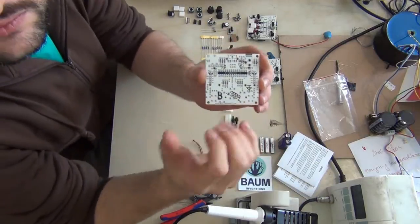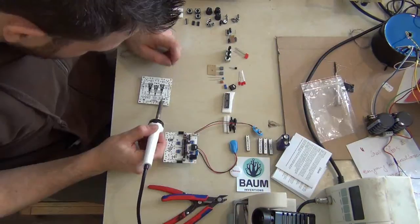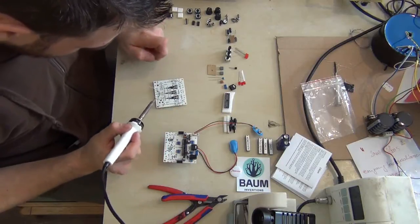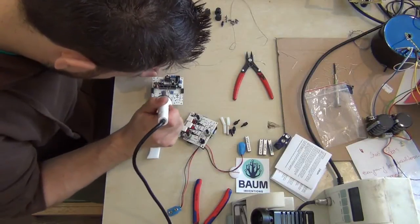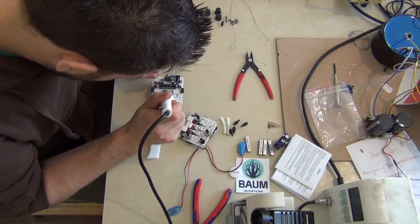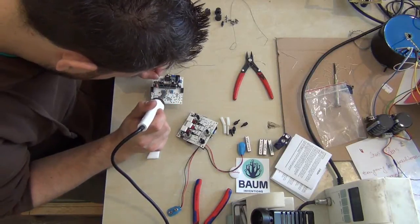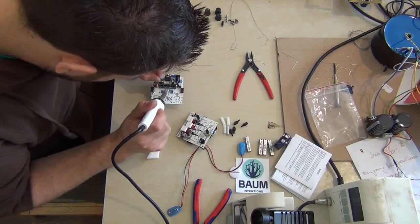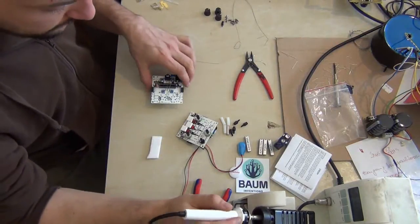The kit is soldered from both sides. You have to start with the component side and it's a good tip to start with the smallest components and go to the bigger components. Start with resistors and diodes and end with bigger ones like capacitors and the power jack and the headphone jack.